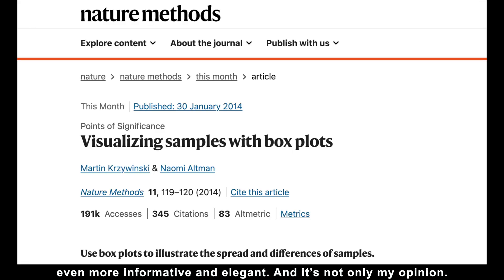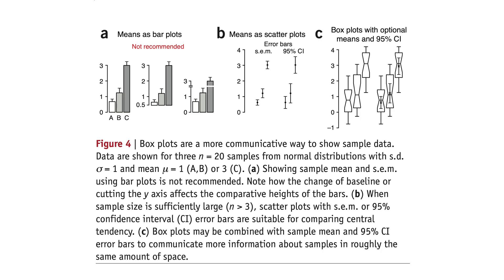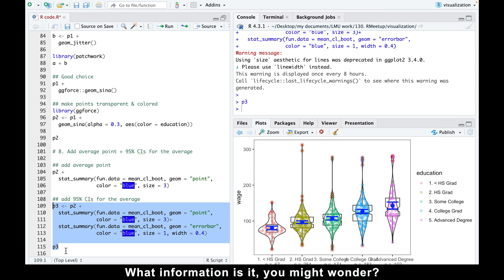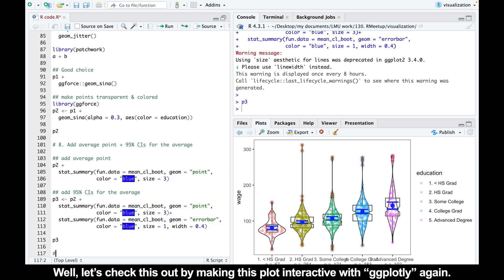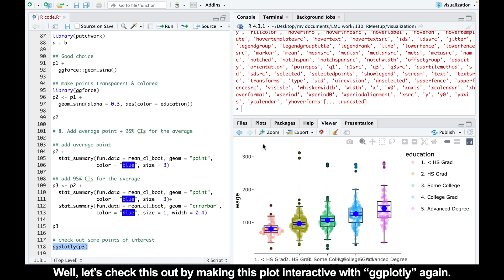And it's not only my opinion. Namely, a scientific paper about visualizing samples with box plots published in Nature says. Box plots may be combined with sample mean and 95% confidence intervals error bars to communicate more information about samples in roughly the same amount of space. What information is it, you might wonder? Well, let's check this out by making this plot interactive with ggplotly again.